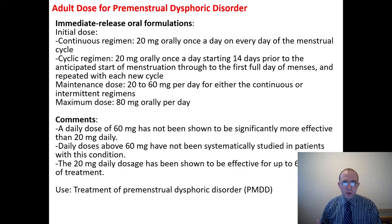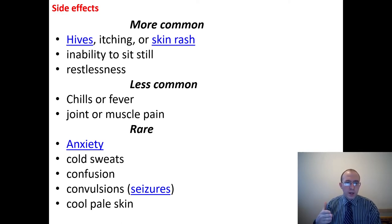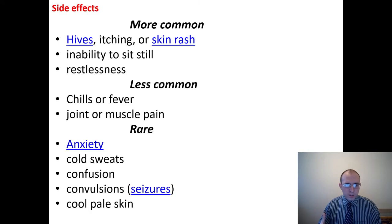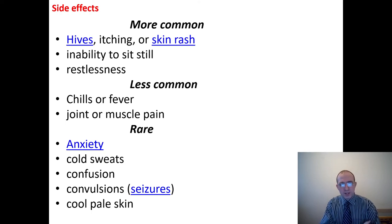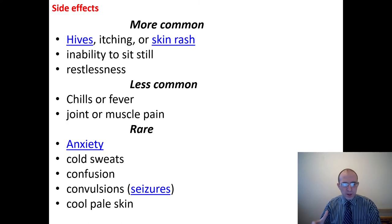Adult dose for premenstrual dysphoric disorder is the same. Side effects of fluoxetine: more common side effects are hives, itching or skin rash, inability to sit still, and restlessness. Less common side effects are chills or fever and joint or muscle pain. Rare side effects include anxiety, cold sweats, confusion, convulsions, and cool pale skin.